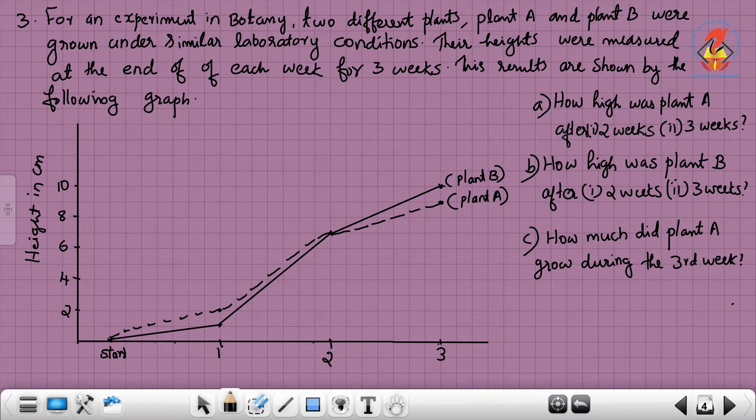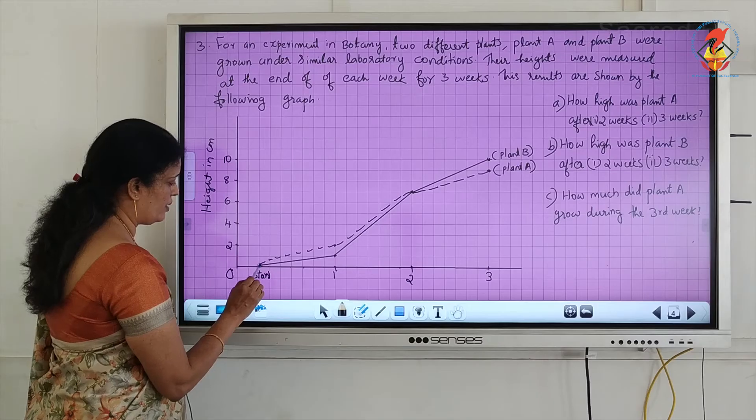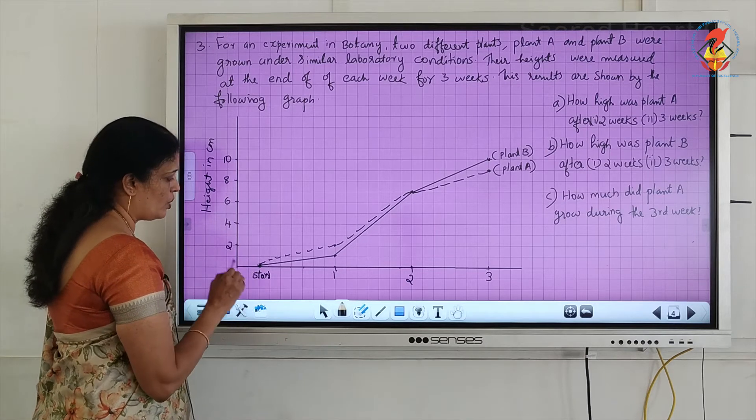Next, the third question. For an experiment in botany, two different plants, plant A and plant B, were grown under similar laboratory conditions. Their heights were measured at the end of each week for three weeks. The results are shown by the following graph. First, this graph starts from the origin. The plants are growing from here, the starting point is there.